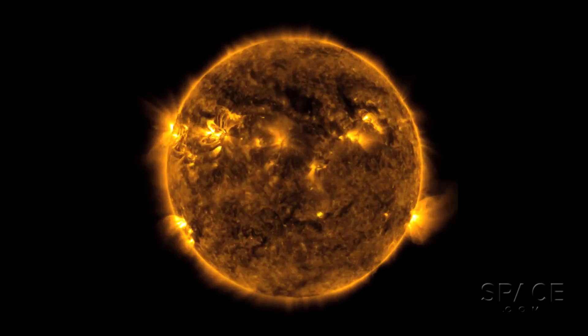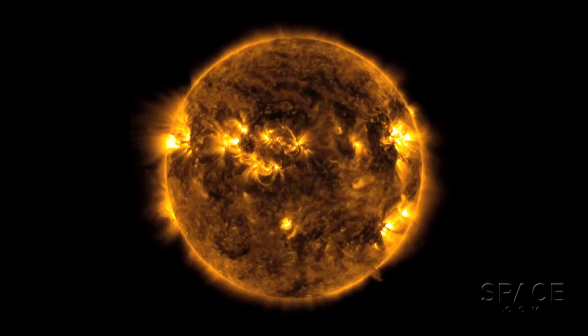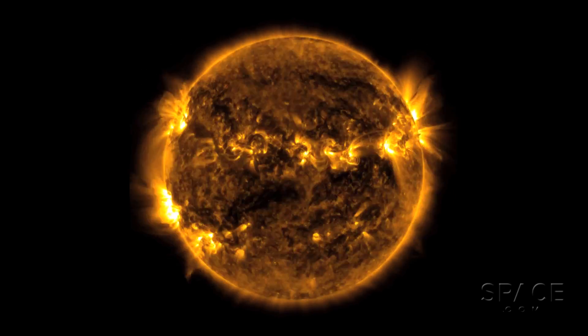The events within any solar cycle have never been completely predictable. Researchers are seeing this as a glowing example of just how much we don't know about the Sun.